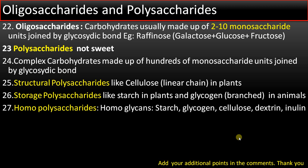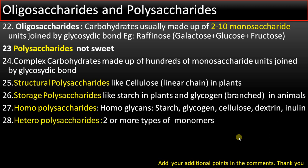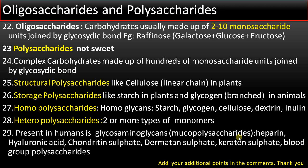Examples of homopolysaccharides include starch, glycogen, cellulose, dextrin, and inulin — all made up of glucose. Heteropolysaccharides are made up of two or more types of monosaccharides and are present in humans as glycosaminoglycans (mucopolysaccharides). Examples include heparin, hyaluronic acid, chondroitin sulfate, dermatan sulfate, keratan sulfate, and blood group polysaccharides.